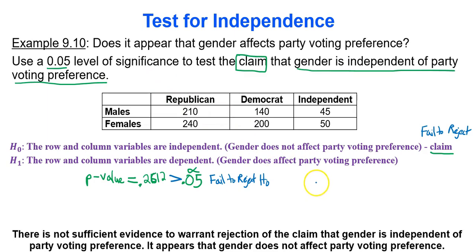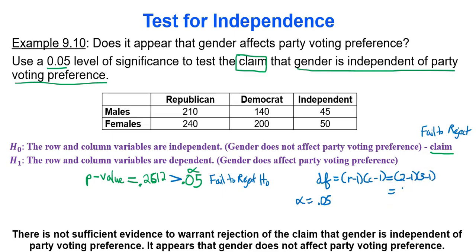If you needed to find the critical value, use alpha equals 0.05 and degrees of freedom: row categories minus 1 times column categories minus 1, which is 2 minus 1 times 3 minus 1, giving 1 times 2, which equals 2 degrees of freedom. Use the chi-squared table with 2 degrees of freedom and alpha 0.05 to find the critical value. That's all — thanks for watching.